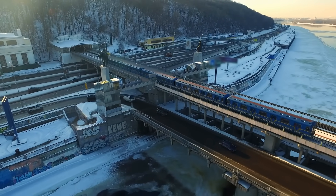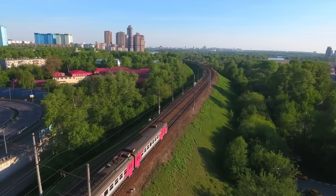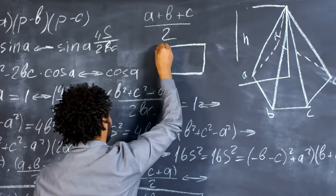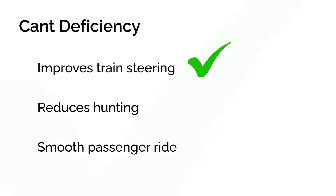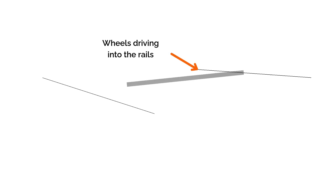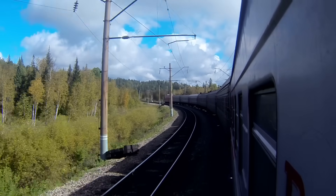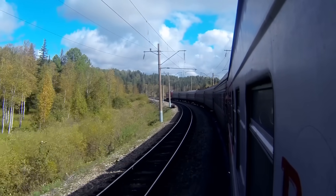It isn't just about mixed traffic. Even on passenger-only lines, applying some cant deficiency brings other benefits. Cant deficiency improves how the train steers through a curve, helps reduce hunting — the side-to-side movement between rails — and smooths out the passenger's ride. At the wheel-rail interface, cant deficiency reduces the angle of attack of the wheel, which lowers wear. A smaller angle of attack means less flange contact and reduced surface stresses, helping prolong both wheel and rail life. It also reduces rail wear and the propagation of rolling contact fatigue, and lets trains of different types use the same curve at different speeds without major compromises.